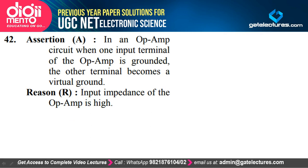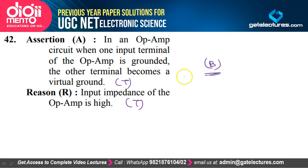Question 42: In an op-amp circuit, when one input terminal is grounded, the other terminal becomes a virtual ground — true, provided the op-amp has negative feedback. The input impedance of the op-amp is high — also true. However, the high input impedance is not the correct explanation for virtual ground. So option B is correct: assertion is true but reason is not the correct explanation.